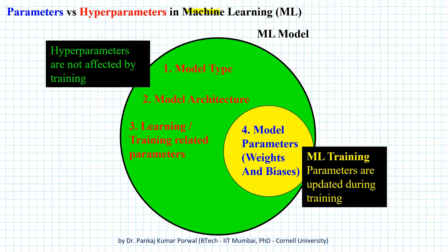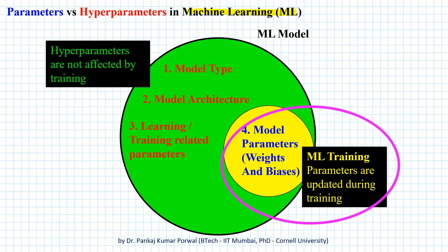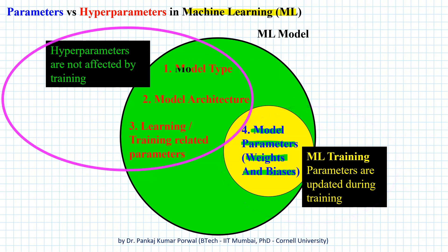In our machine learning tasks, there are several types of parameters and only few of them are learned during the training. These are the model parameters, and in the case of neural networks, these are the weights and biases of our links. All other parameters like model type, model architecture, and learning and training related parameters are decided before the training starts. These parameters are not affected by the training; rather, they affect the speed and quality of our training process.